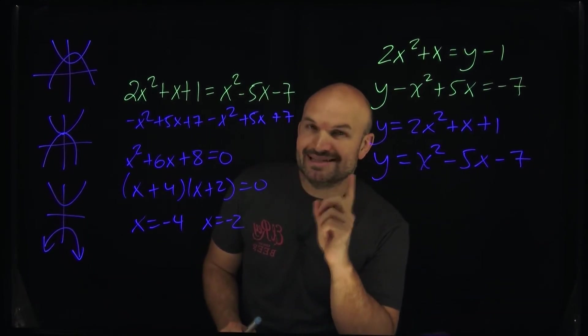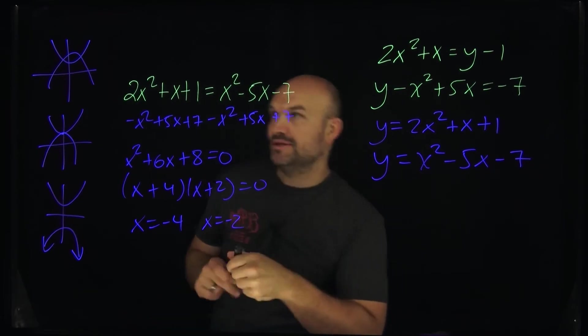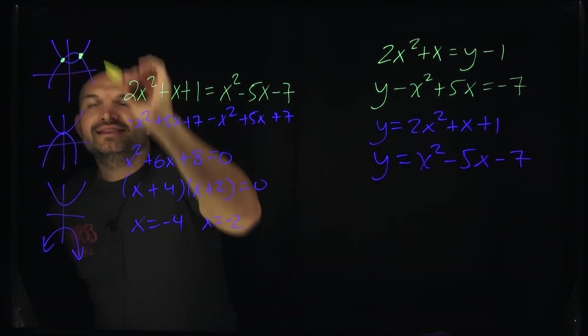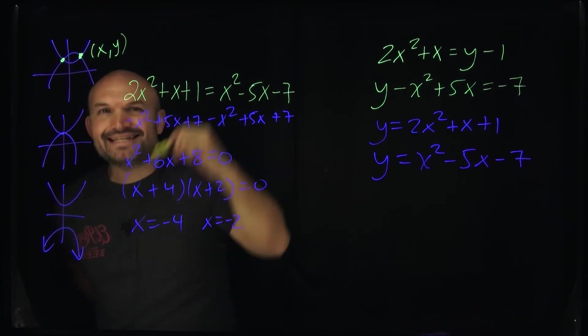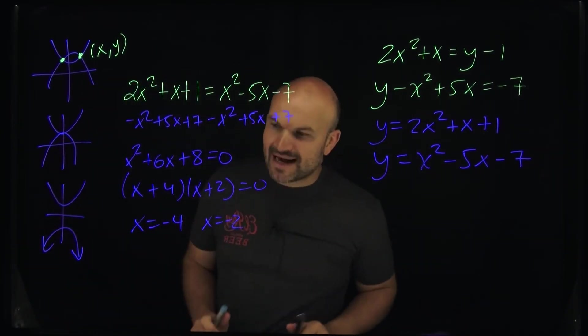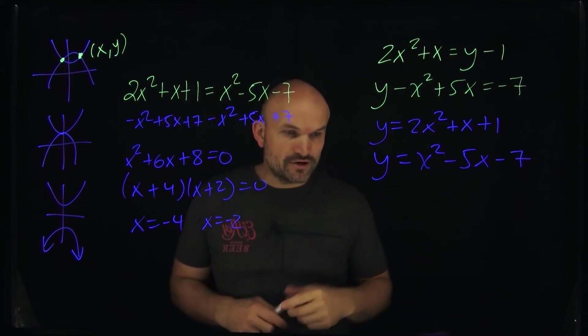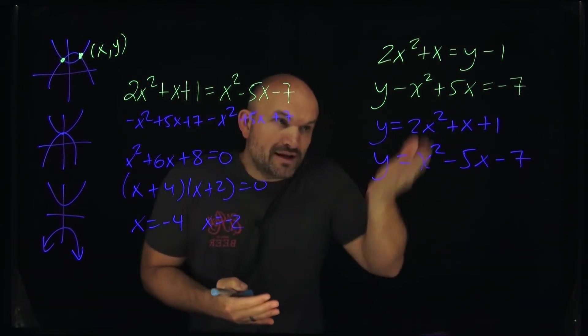But remember what we did. We're trying to find the intersection of two parabolas. This is very important, ladies and gentlemen, because we're not looking for what X is. We're looking for what X and Y is. So therefore, now that we know what X is, to be able to identify the Y-coordinate, what we need to do is plug in the X into one of these equations.